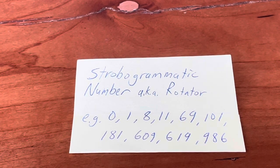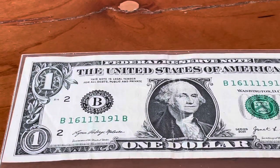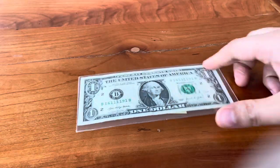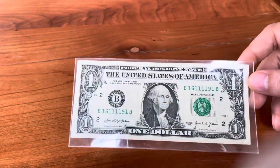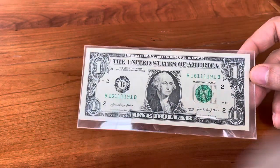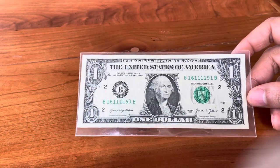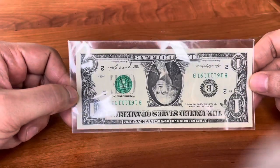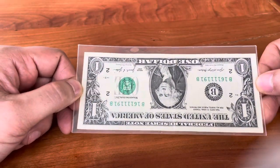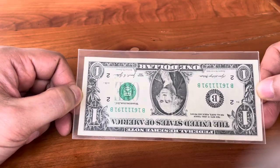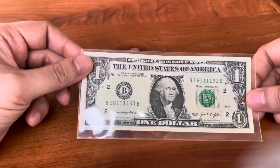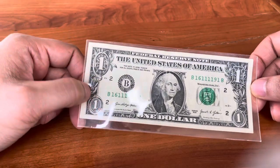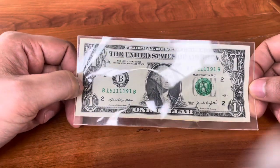So what does that look like in a banknote? The first example would be this 1921 $1 FRN. You see the serial number is B16,111,191B. Now if you rotate that, the serial number remains intact — it's B16,111,191B.